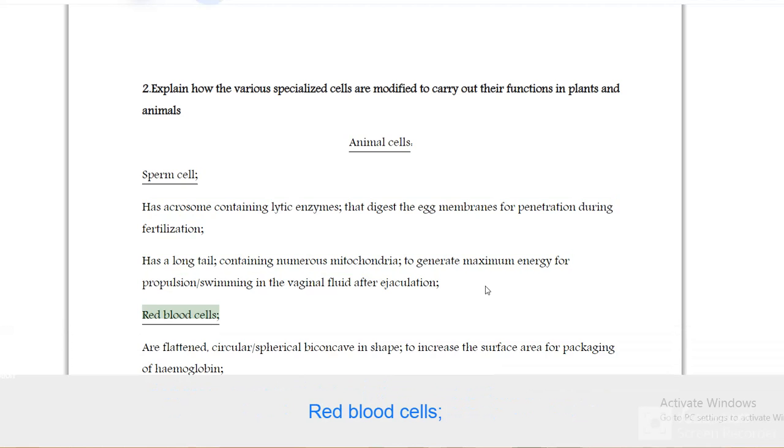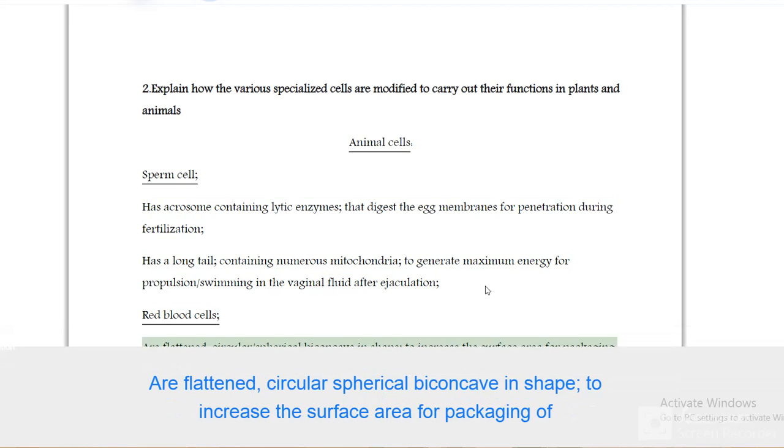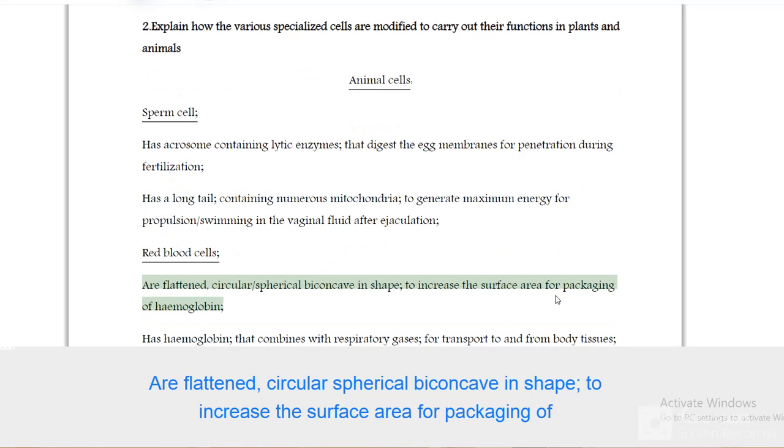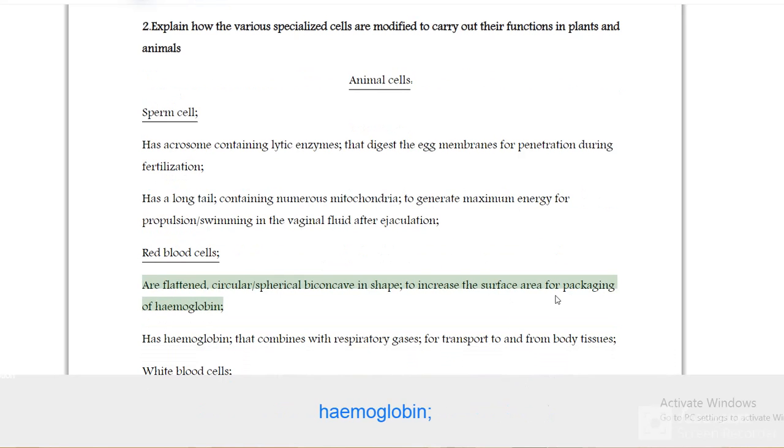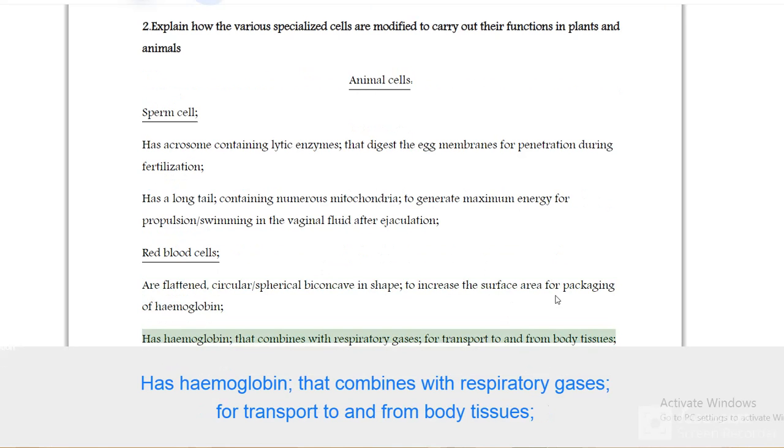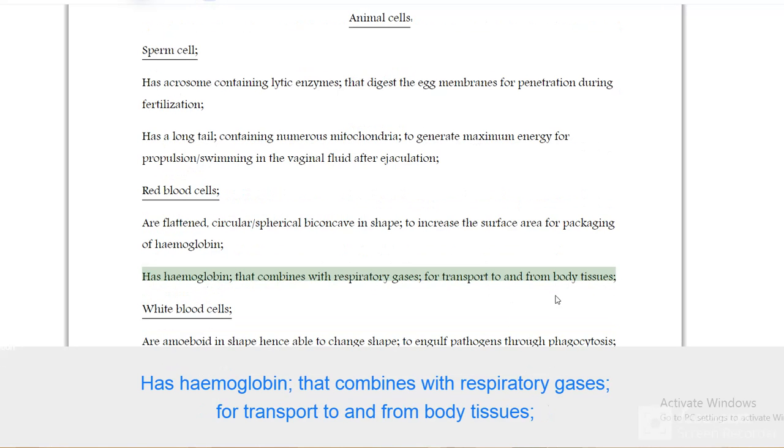Red blood cells are flattened, circular spherical biconcave in shape to increase the surface area for packaging of hemoglobin. Has hemoglobin that combines with respiratory gases for transport to and from body tissues.